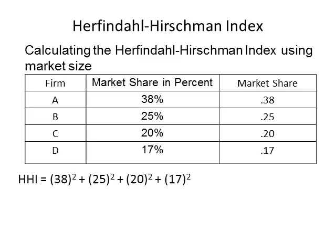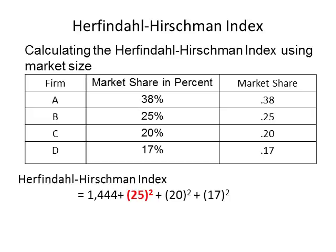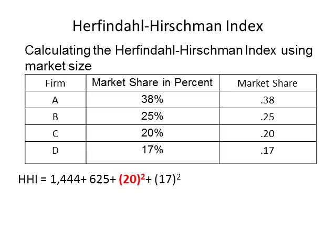Next, each of the numbers will need to be squared — squaring means the number is multiplied times itself. Squaring 38 gives 1,444. Squaring 25 gives 625. Squaring 20 gives 400. Squaring 17 gives 289.